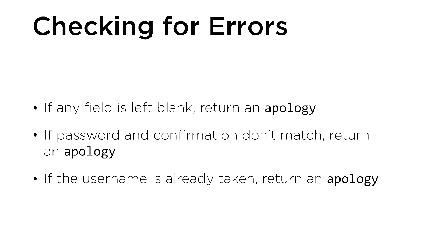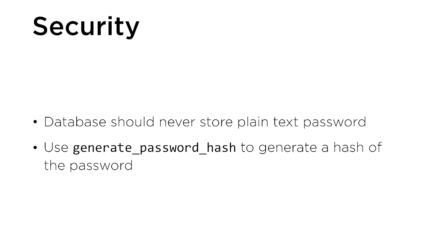Inside your route, you'll also want to check for possible errors. If any field is left blank — username, password, or password confirmation — you should return an apology. If the two passwords don't match, let the user know. If the username is already taken by someone else in your database, apologize to the user about that as well. Once you've confirmed there are no errors, add the user to the users table. Remember that databases should never store plain text passwords — use the generate_password_hash function and store the hash instead.